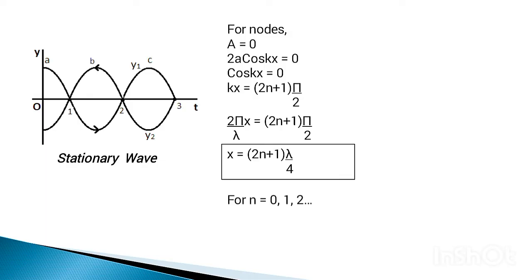For n equals 0, x equals λ/4, which is the position of node 1. For n equals 1, x equals 3λ/4, which is the position of node 2. For n equals 2, x equals 5λ/4, which is the position of node 3. Putting larger values of n gives additional node positions.